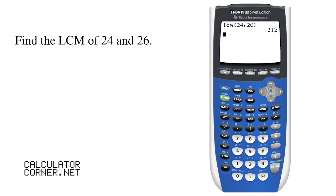And the answer is 312. What about the situation where you have more than two numbers and you want to find their least common multiple? Let's look at our next problem.